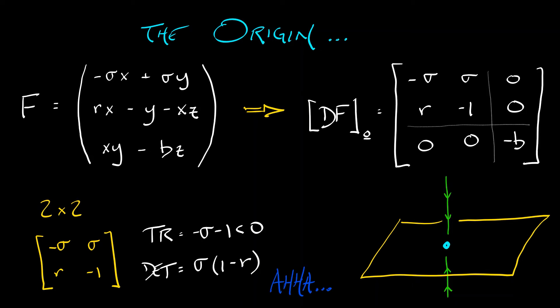So, that's sigma times quantity one minus r. And again, we see that one minus r show up. Aha.